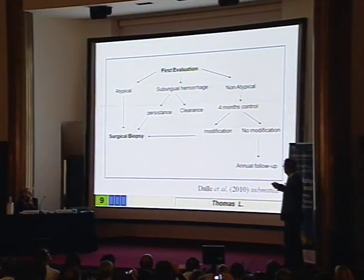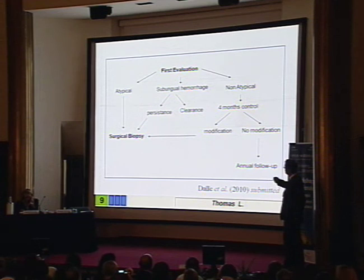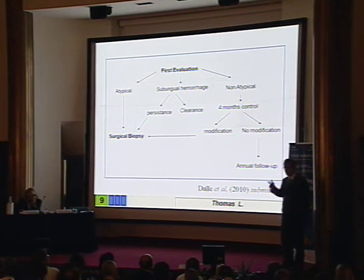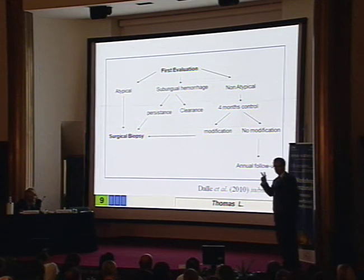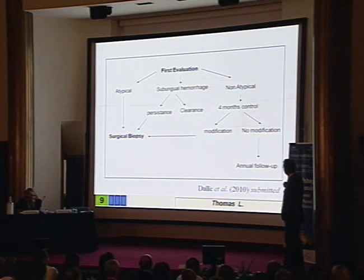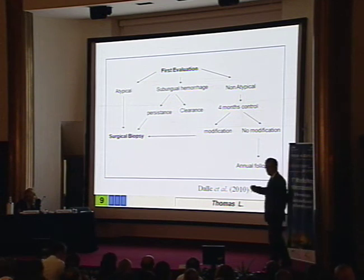We propose this management scheme: at first evaluation, if you see an atypical lesion, surgical biopsy must be performed immediately. If it's a subungual hemorrhage that clears after four to six months, that's the end of the story; if it's not changing, surgical biopsy can be performed. If it's non-atypical, since nail pigmentation is not very common, it's better to follow the patient and see them after four months. If it's changing, take a biopsy; if after four months there's no change, a yearly follow-up is enough to pick up the few melanomas that you miss at first examination.